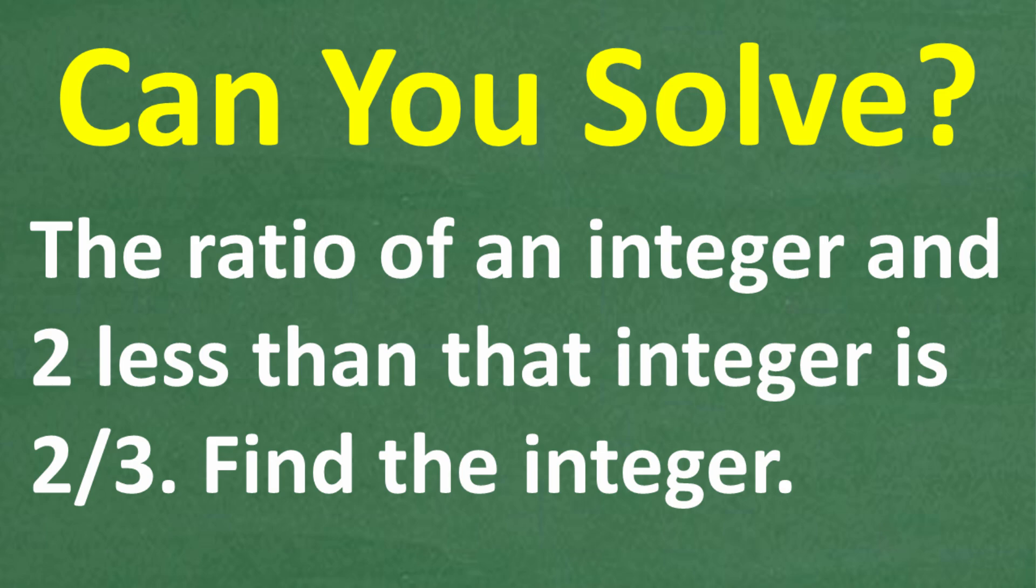The ratio of an integer and two less than that integer is two-thirds. Find the integer.